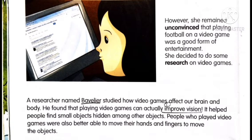A researcher called Bavilio studied how video games affect our brain and body. He found that playing video games can actually improve vision. It helped people find small objects hidden among other objects. People who played video games were also better able to move their hands and fingers to move the objects. 'Affect' is a verb meaning a change, and 'effect' is the result of that change. So Bavilio found that playing video games actually improves vision — this is a point supporting, or for, video games.